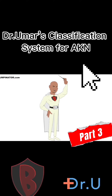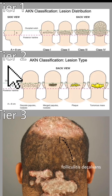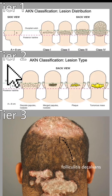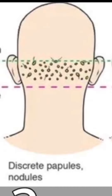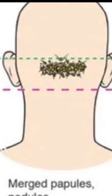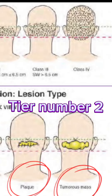This is Part 3 of How to Classify AKN Bumps. Completing Tier 2 classification, which describes the different forms of AKN we've already described — discrete and merged papules and nodules. On Part 3, we would now like to complete Tier 2 by describing plaques and tumorous masses.